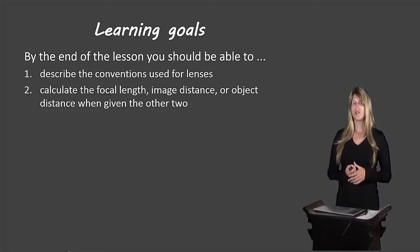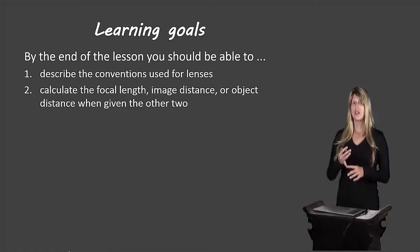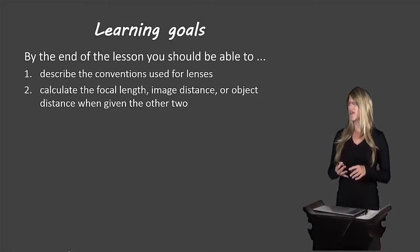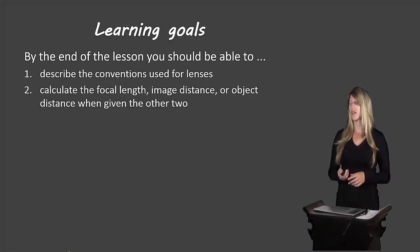We have two learning goals for today. The first is to describe the conventions used for lenses — those would be the positive and negative signs that we use in the formulas. The second is to calculate the focal length, image distance, or object distance when given the other two variables.